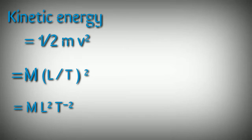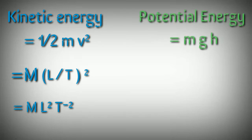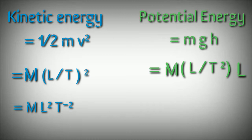Let's take the example of potential energy now. The potential energy can be written as mgh. m is the mass, g is the acceleration due to gravity, and h is the height. The dimensions of mass are M, g is the acceleration due to gravity, acceleration is m per second squared, so L by T squared. The height, the dimensions of height are L. So the overall dimensions of potential energy are also M L squared T raised to power minus 2.